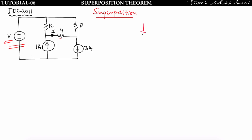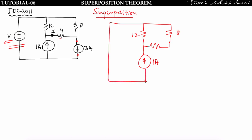Take the 1A current source alone: open circuit the other current source and short circuit the voltage source. The circuit has a 1A source in parallel with two 12Ω branches. Since both branches have equal resistance, by the current division rule: i2 = 1 × 12/24 = 0.5A.